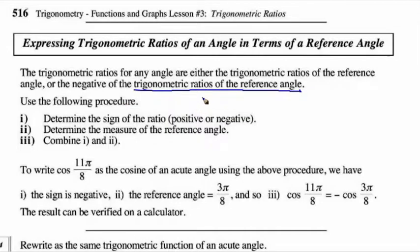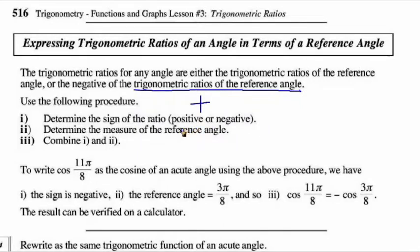You can use the following procedure: see where the terminal arm terminates. Using that quadrant, you can determine whether the trig ratio is going to be positive or negative — of course it depends on whether it's sine, cosine, or tan. Then you can determine the measure of the reference angle. Once you know that, you can determine the trig ratio of the reference angle, combine it with the sign determined from the quadrant, and combine the two.